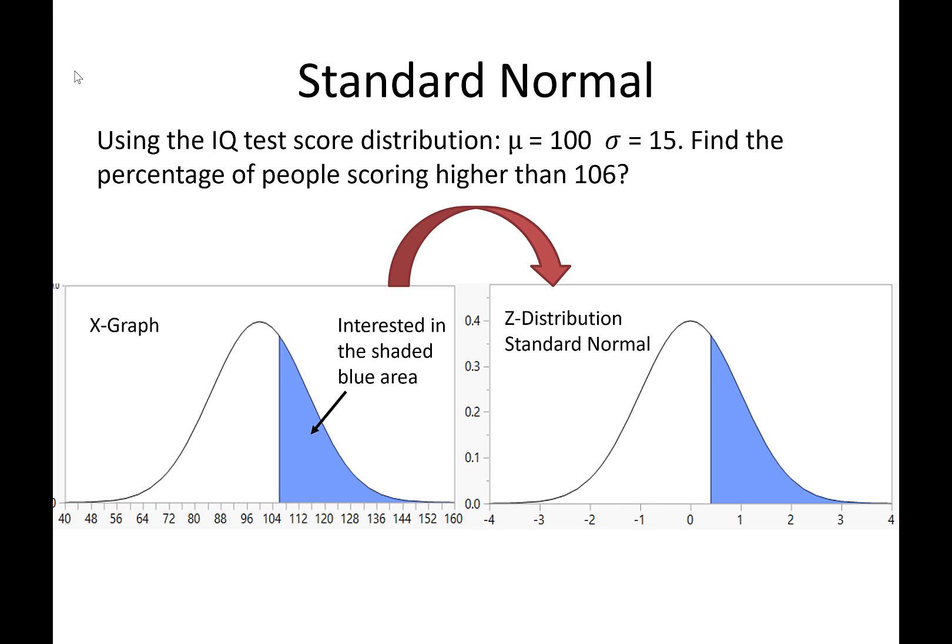So essentially what we're interested in is this blue shaded area in our x-graph. And what we're going to do is we're going to take that 106 and we're going to find the z-score associated with it. Then what we'll do is we'll find the percentage or the probabilities in our z-score world and associate them back to our x-graph world.